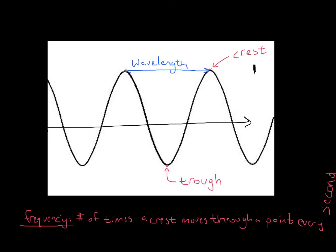The units of frequency are hertz, which is what you would dial your radio to — 750 would be 750 megahertz. The symbol for that is Hz: capital H, lowercase z.